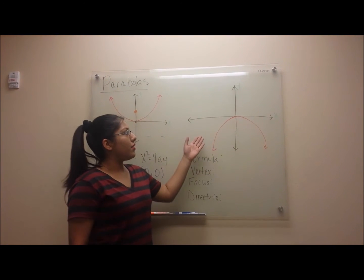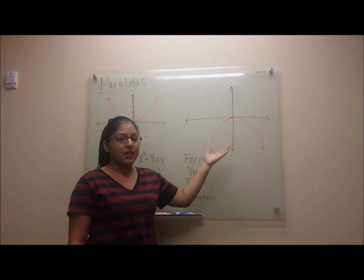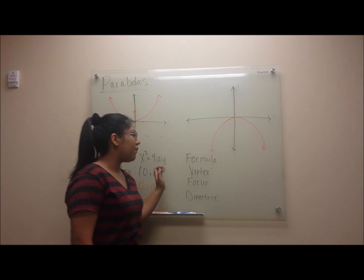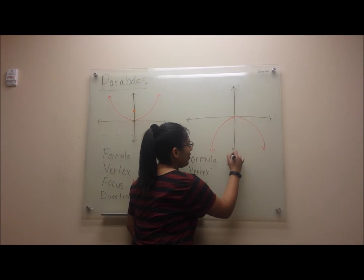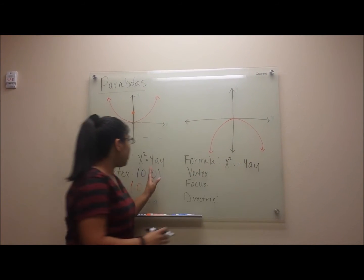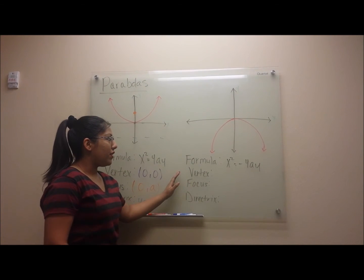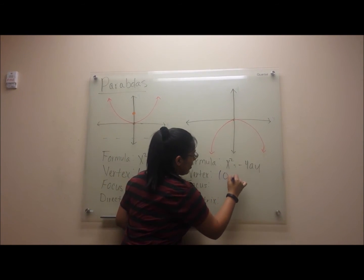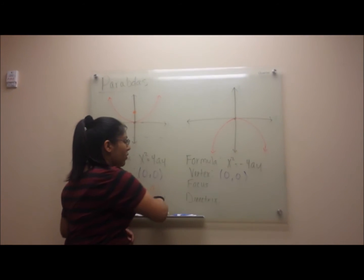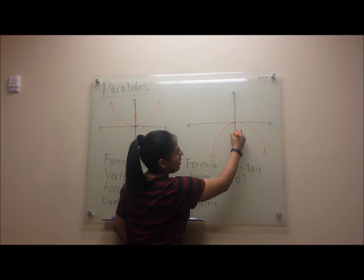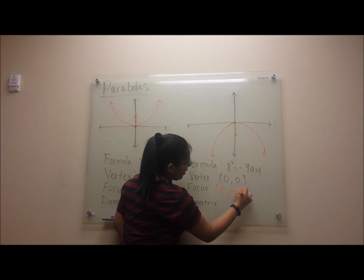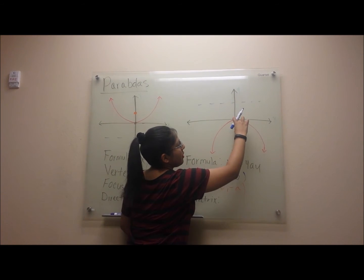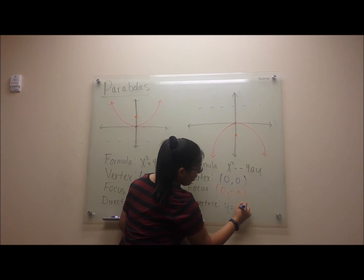Now let's look at our second graph. Our second graph also opens on the y-axis, but this time it opens on the negative side. The components are almost similar, but with a difference of a few negatives. The formula for this graph is x squared equals negative 4ay. Our vertex is still at the origin, 0, 0. Our focus will be 0, negative a. And our directrix will now be up here, so it will be y equals positive a. The same distance from here will be the same distance from here.